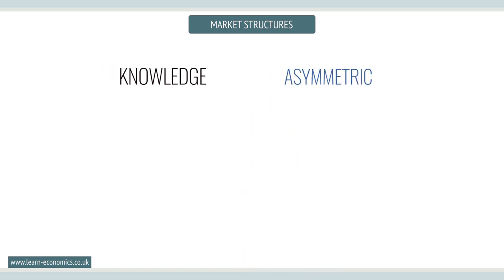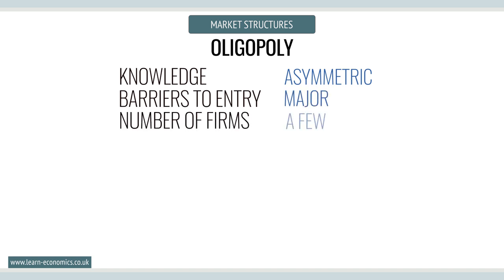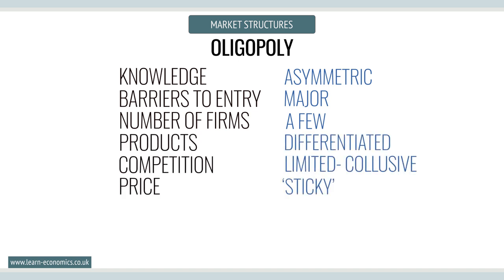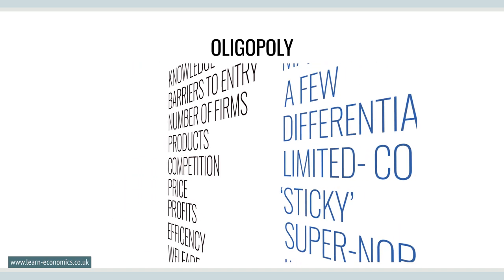For duopoly and oligopoly, knowledge is only partial and not symmetrical, with firms able to control information. Major barriers to entry exist. There are just a few interdependent firms. Products may be differentiated. Firms may engage in collusion. Price tends to remain sticky. Supernormal profits are likely. Firms are not allocatively or productively efficient and there is a welfare loss as price is greater than marginal cost.